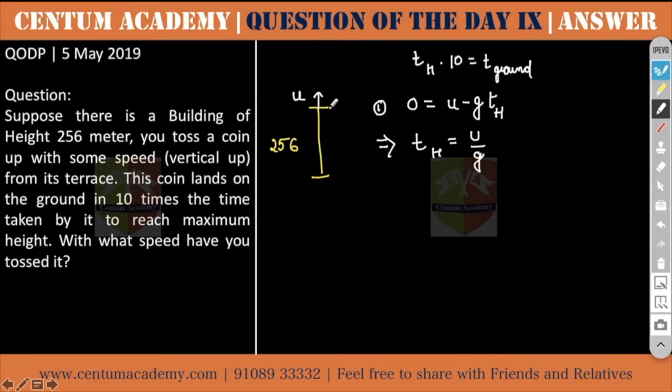Now what is the time taken by the same to reach the ground? There are two ways. You can calculate this time of the whole journey or you can calculate the time of this journey because displacement is going to be the same. So I am writing t landing instead of ground because g may confuse you.